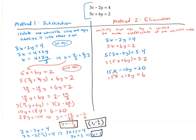Notice that the coefficients of x match. So if I subtract the second equation from the first, the x term will completely cancel — zero times x. I'm left with negative 10y minus 18y equals negative 28y, and 20 minus six equals 14. Solving for y, I get y equals 14 over negative 28, which is negative one-half, just like before.